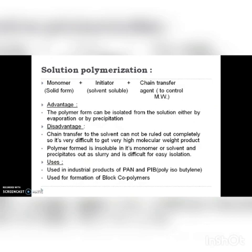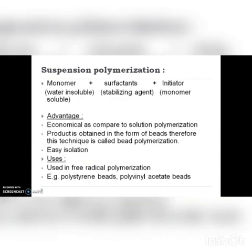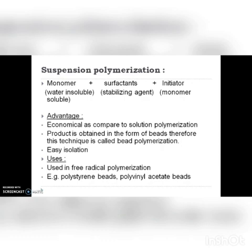Suspension polymerization is one of the most widely used techniques. The system consists of a dispersing medium, monomer, stabilizing agents, and a monomer-soluble initiator. Since water is used as the continuous phase, it acts as a very effective heat transfer medium, making it economical and more environmentally friendly. Purification and processing of the polymer is much easier. The final product is 100% solid resin. Practically all common thermoplastic polymers can be made by this method, including high-volume resins such as polystyrene, polyvinyl acetate, and vinyl chloride.